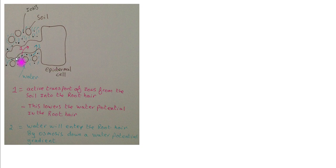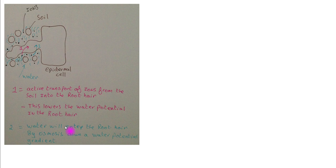This diagram shows an epidermal cell with the root hair coming out and soil particles in brown surrounding the root hair. The black dots represent the various ions within the water. Number one in pink shows the active transport of ions into the root hair cell, which lowers the water potential within the root hair cell. Number two shows water entering the root hair by osmosis down a water potential gradient. If you get an essay on this topic, it is vital that you talk about the ions — some questions explicitly tell you to discuss them.